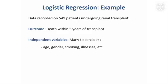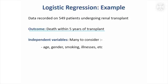I spent a bit of time looking at a logistic regression example. This used data taken from patients who were on a waiting list about to undergo renal transplant. They had lots of things measured about their illness and general characteristics such as age, whether they smoked, and gender. One of the outcomes was whether the patient died within five years of transplant, so it was really geared at finding out which patients were likely to do well after transplant.